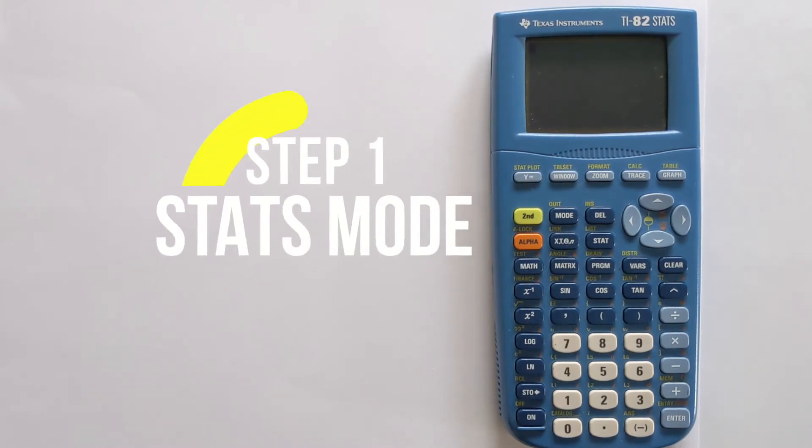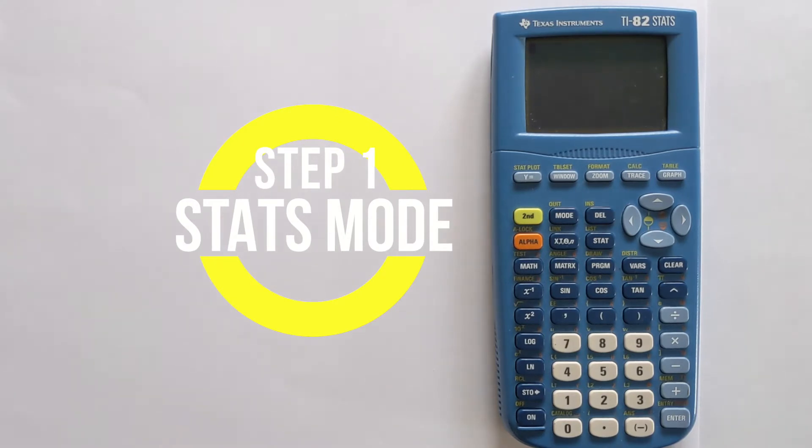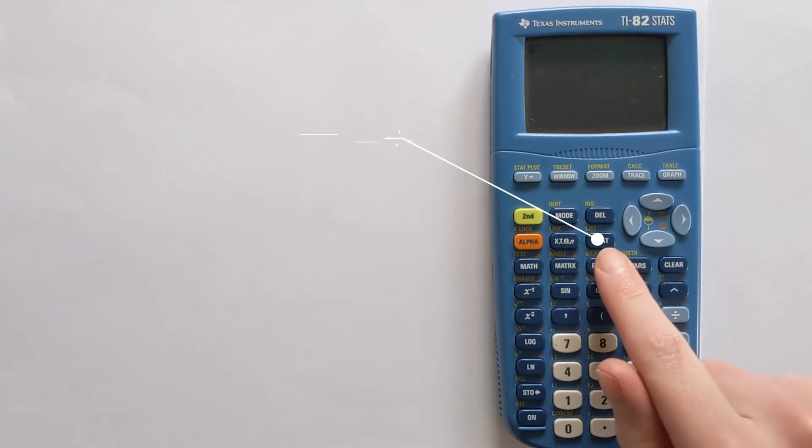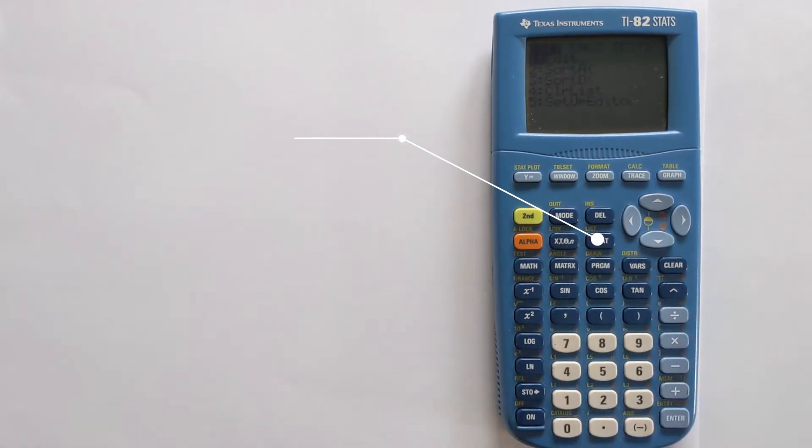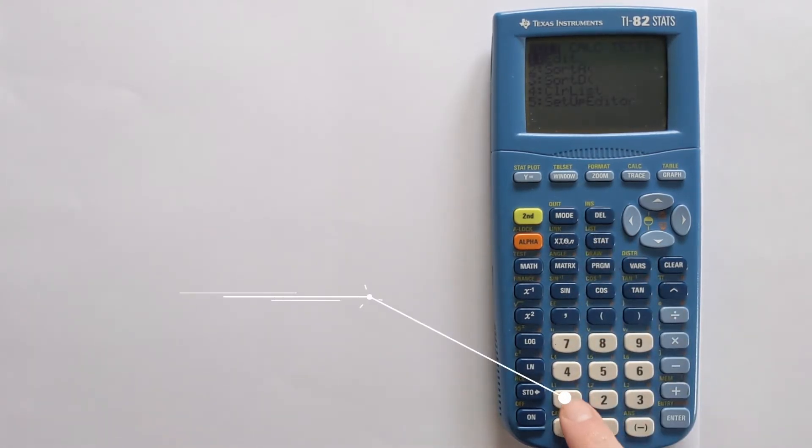The first step is to access the statistics functions, and you do that, unsurprisingly, by pressing the STAT button. We want to enter the data, so we're going to press 1, and this gets us to this editor.